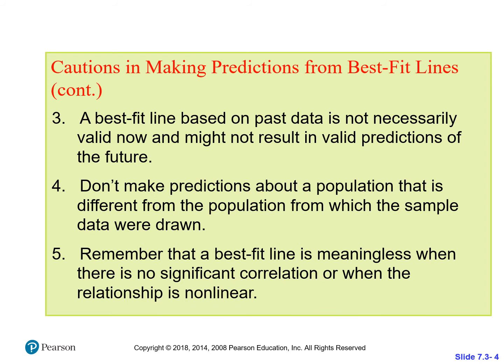Remember that a best fit line is meaningless when there's no significant correlation or when the relationship is non-linear. Best fit lines only work with linear data; they do not work with non-linear correlations. Outliers can play a huge role, and gaps in data as well. If we have two different categories on the same axis — we saw that with the educational versus the regular TV — those are all variables that can impact the correlation. So we want strong, significant correlation for a best fit line to be most effective.